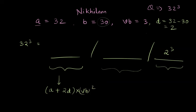And so in this case it will be a which is 32 plus 2 times deviation which is 2 and then we will complete the bracket times vice base which is 3 and square.